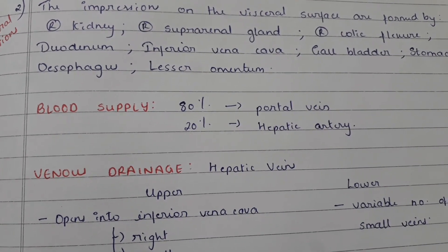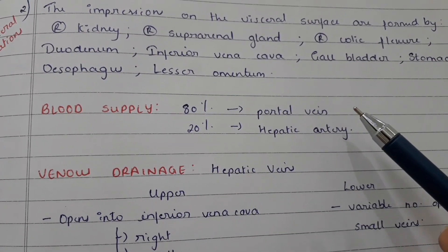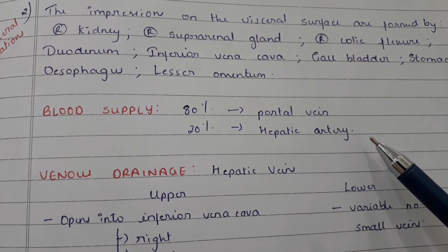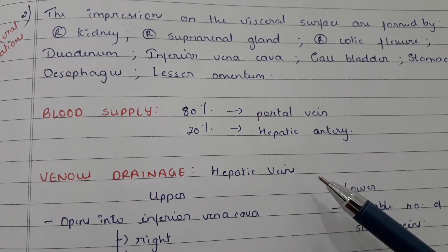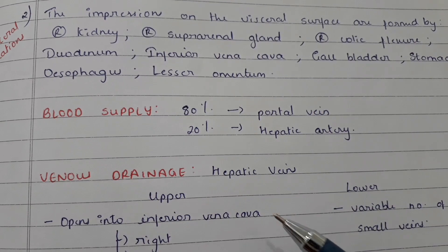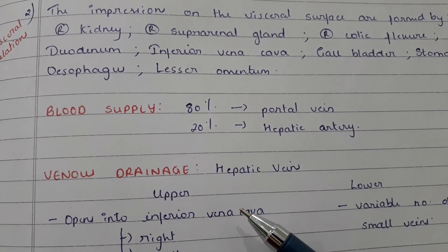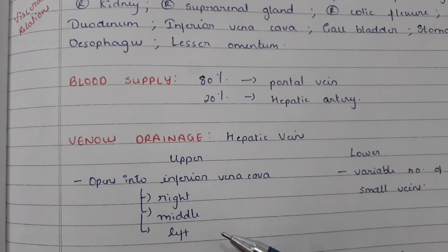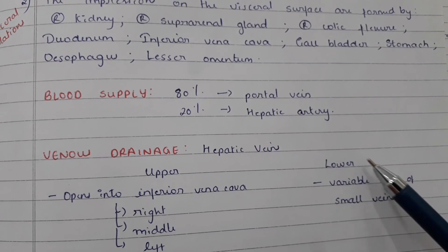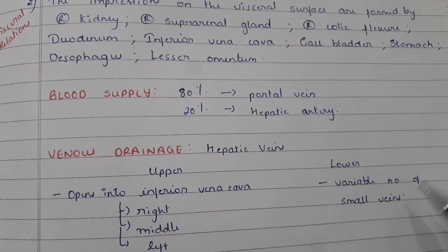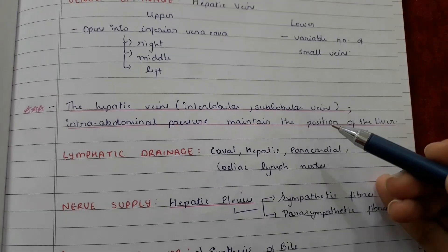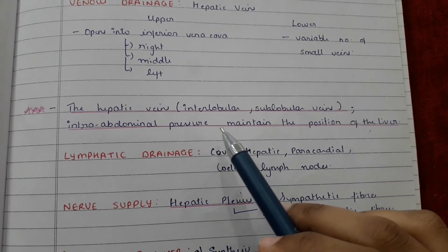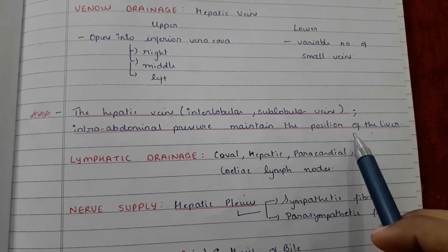Blood supply of the liver: 80% of the blood is received from the portal vein and 20% from the hepatic artery. Venous drainage occurs into the hepatic veins — upper and lower. The upper drains into the inferior vena cava via right, middle, and left hepatic veins; the lower drains into a variable number of small veins, including the interlobular and sublobular veins. Intra-abdominal pressure helps maintain the position of the liver.